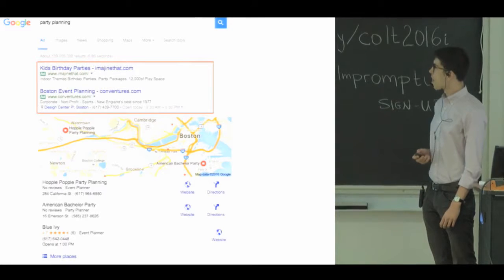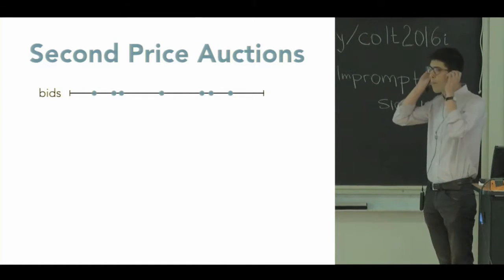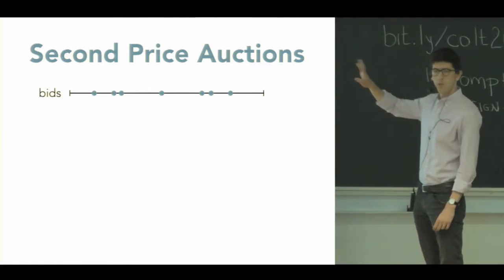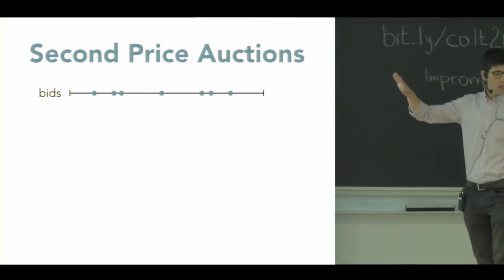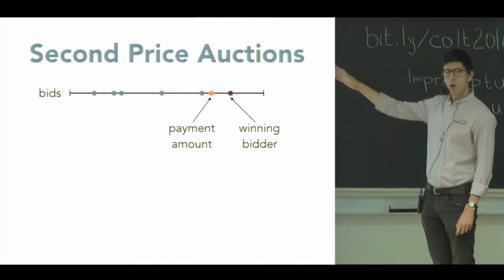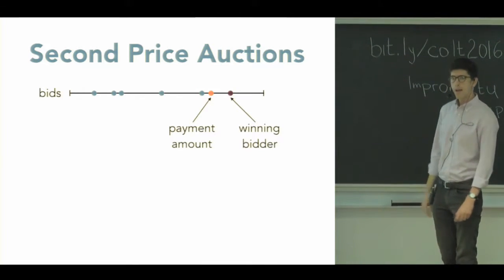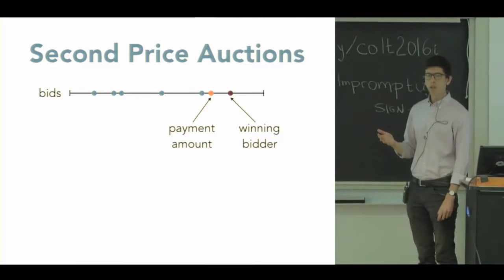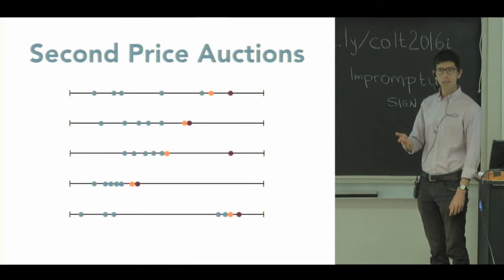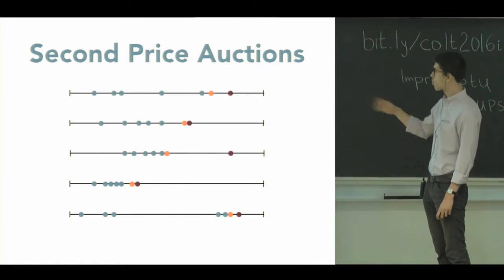So there's a particular model of auctions that is really theoretically popular and used in practice as well. It's called the second price auction. And here's how it works. A bunch of bidders are bidding on a single good, and we imagine they all submit sealed bids to some central seller. The way the auction runs is that the person who submits the highest bid wins the auction, and the amount they pay is the second highest bid. So the highest bidder wins the item, the second highest bid is the price they pay.